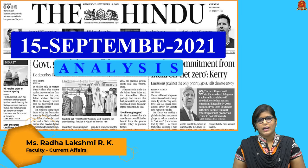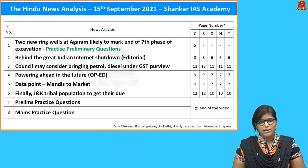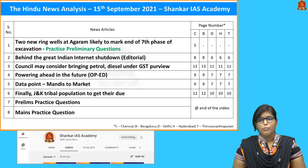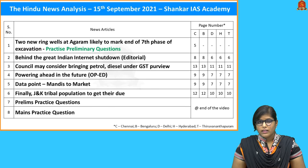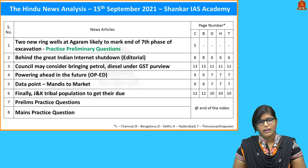Good evening aspirants. Welcome to the Hindu newspaper analysis brought to you by Shankar IS Academy for the date 15th of September 2021. These are the list of articles chosen for today's discussion. We'll start with two previous year questions about the Indus Valley civilization as a recall for your preliminary examination. Followed by an editorial on internet shutdowns, then GST and GST council, an article on electrical vehicles, a data point on APMCs, and finally an article on the Forest Rights Act.